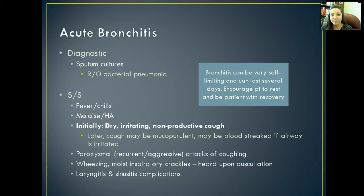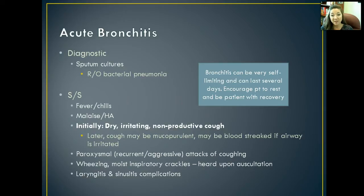Later on, the cough might become mucopurulent, which means you'll see them coughing up stuff, and a lot of times that sputum might be blood-streaked, especially if their airway has become very irritated from the excessive coughing. They can also have paroxysmal — which means recurrent or aggressive — attacks of coughing that occur for quite a long period of time. Even once we control the cough, every now and then it just keeps coming back more and more aggressive.